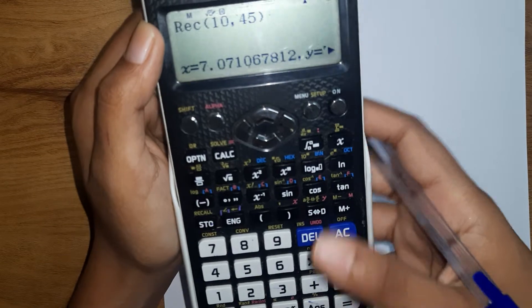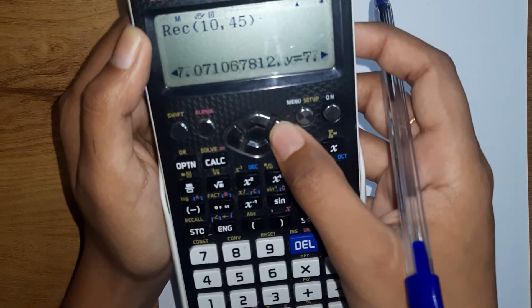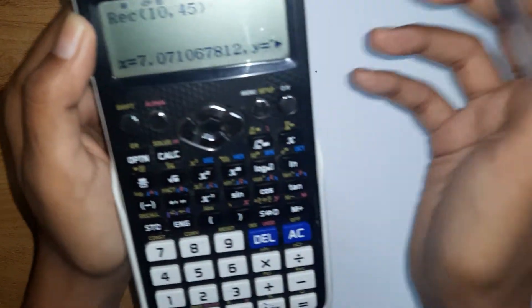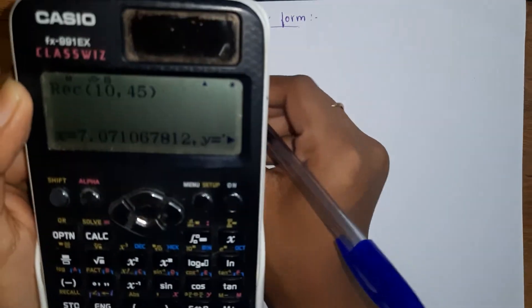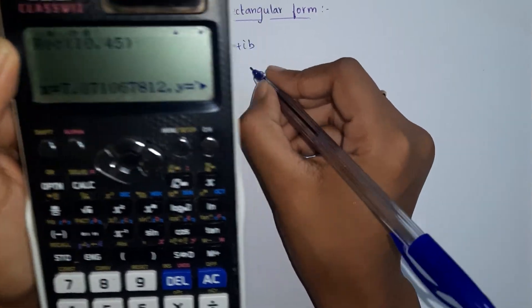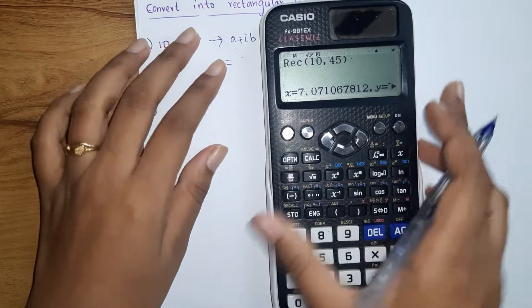Just equals to, you will get the values. X and Y values, that means a and b values. So we have to write in the form of, as you see here, what did we get?